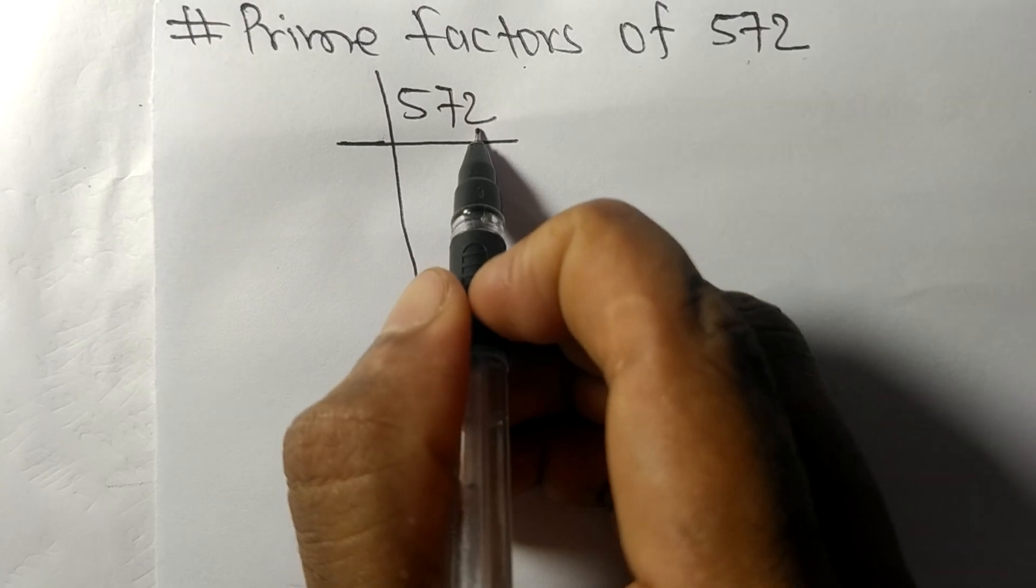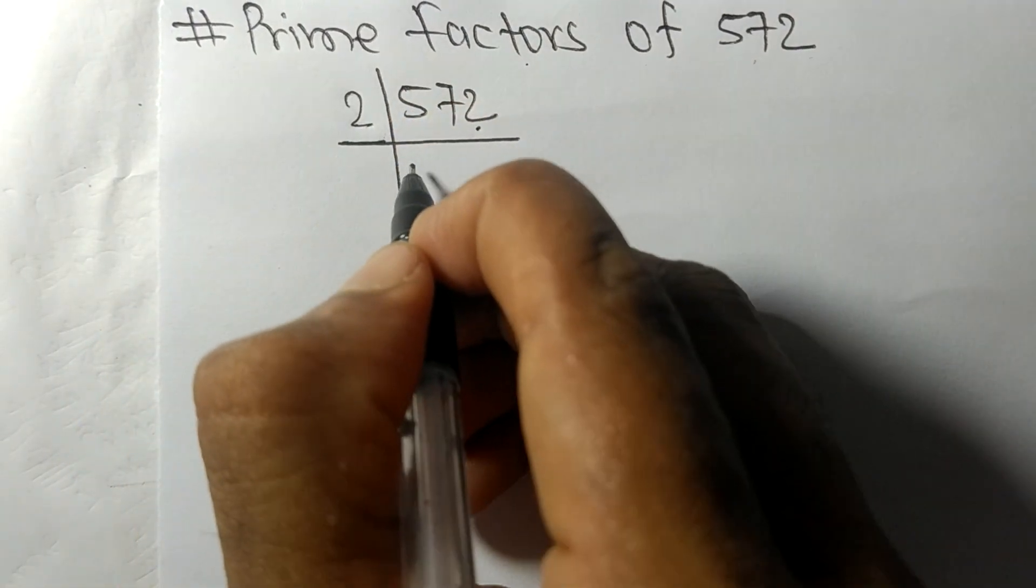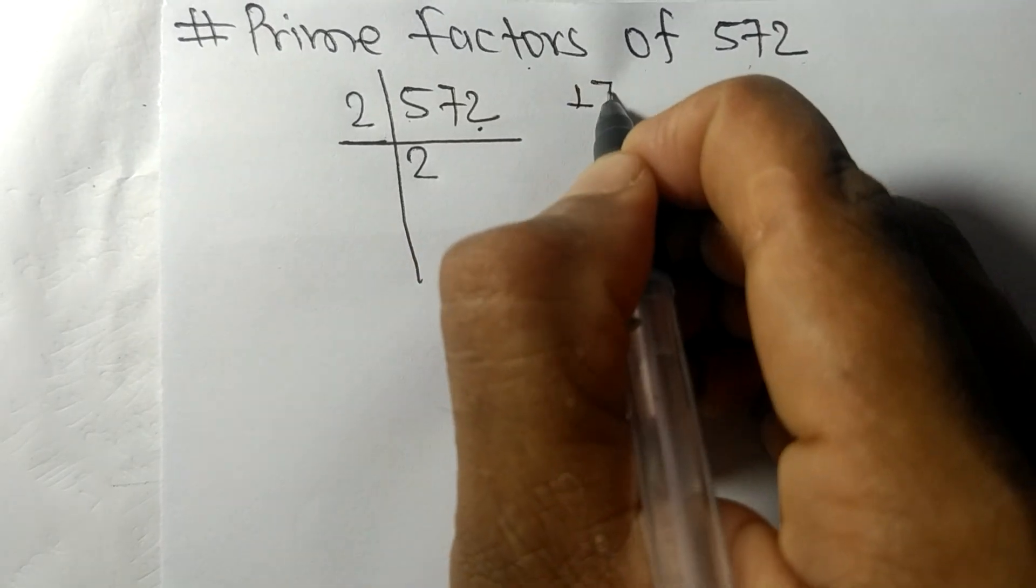2 times 2 means 4, remainder 1, and this 7 gives 17. So 2 times 8 means 16, remainder 1, and this gives 12. So 2 times 6 means 12.